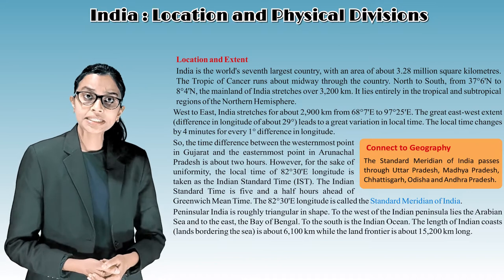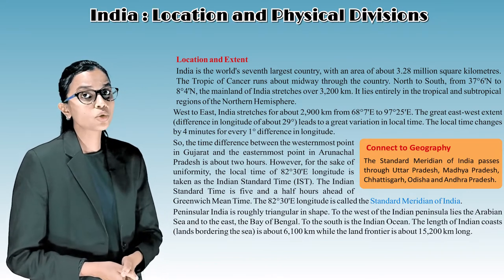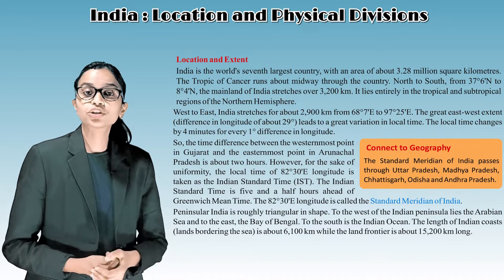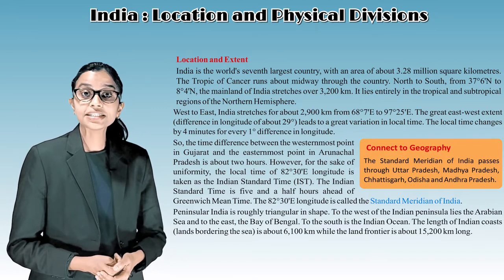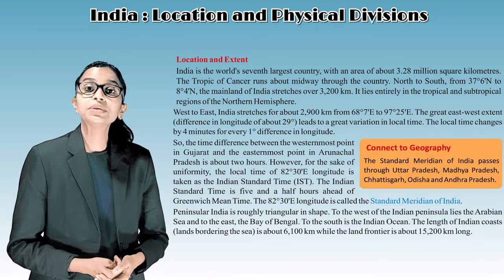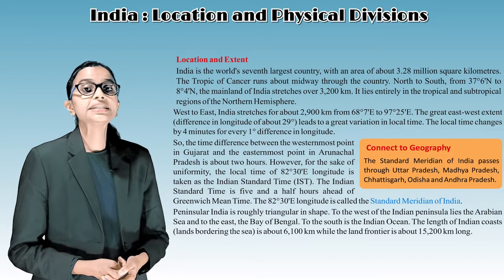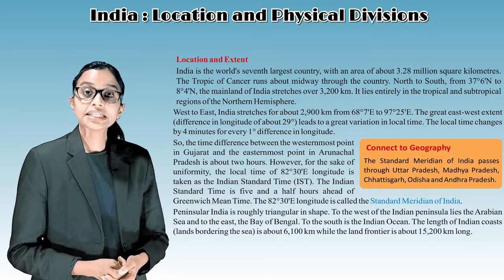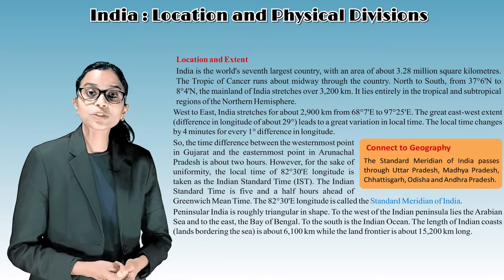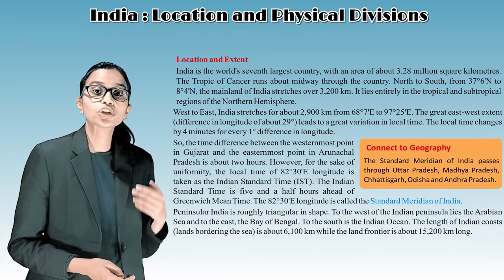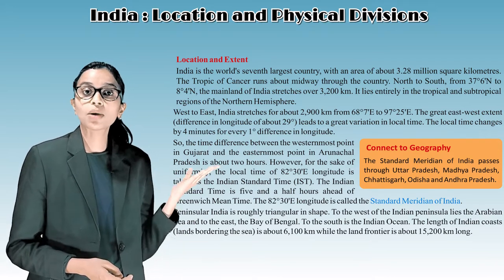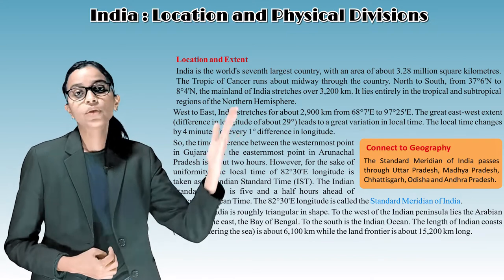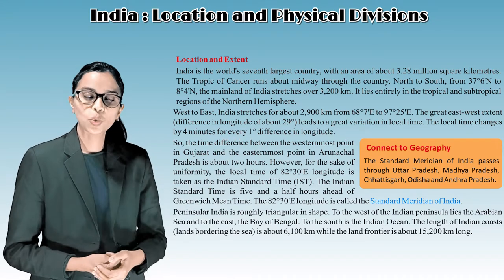From west to east, India stretches for about 2,900 kilometers, from 68°7' East to 97°25' East. This great east-west extent and difference in longitude of about 29 degrees leads to a great variation in local time.